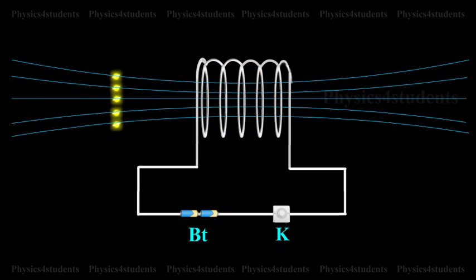An induced current flows through the coil which, according to Lenz's law, opposes the further growth of current in the coil.